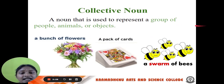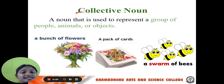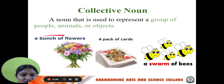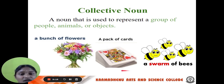Now let us see collective noun. A noun that is used to represent a group of people, animals or objects is called a collective noun. For example, a bunch of flowers — it consists of a collection of flowers; a pack of cats; a swarm of bees. These are called collective nouns.